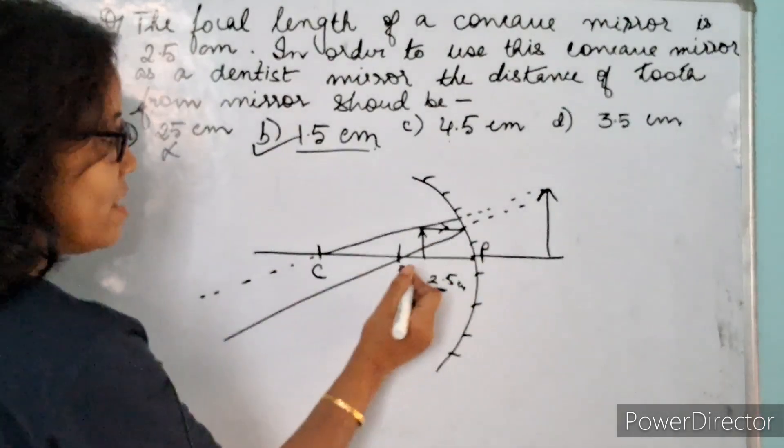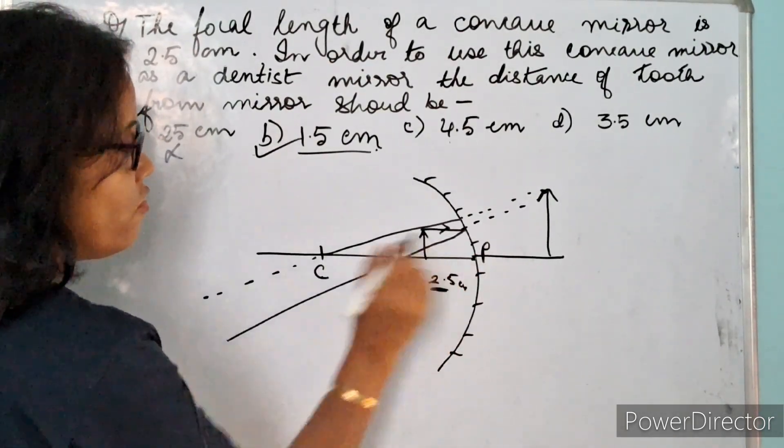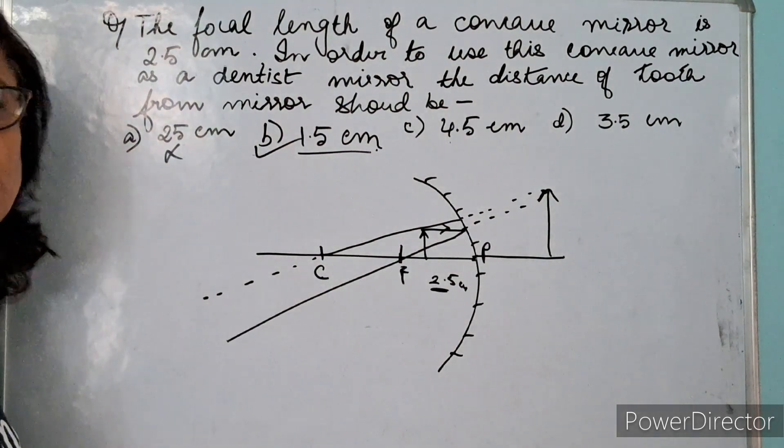That means this 1.5 centimeter will be anywhere between the pole and the focus. Thank you so much for watching.